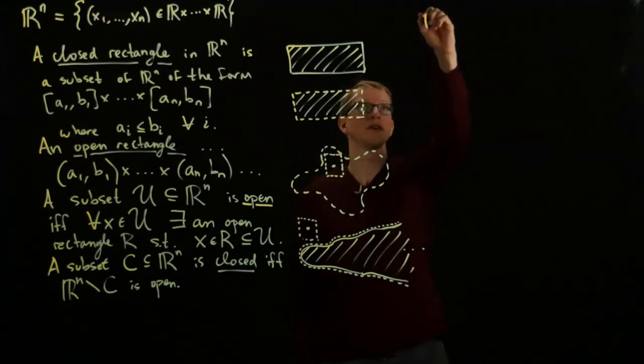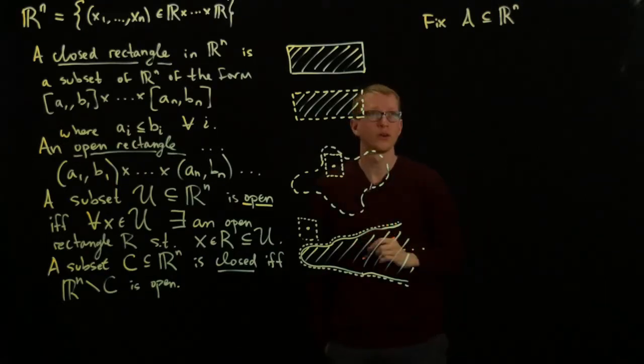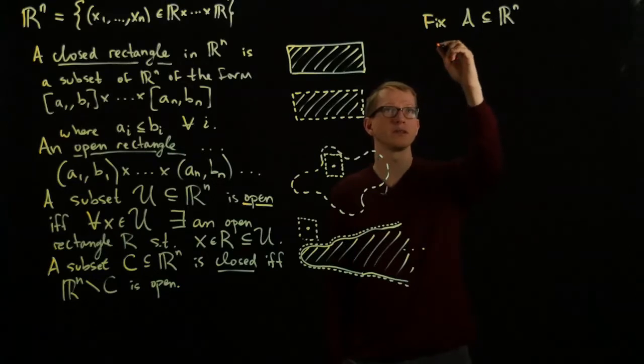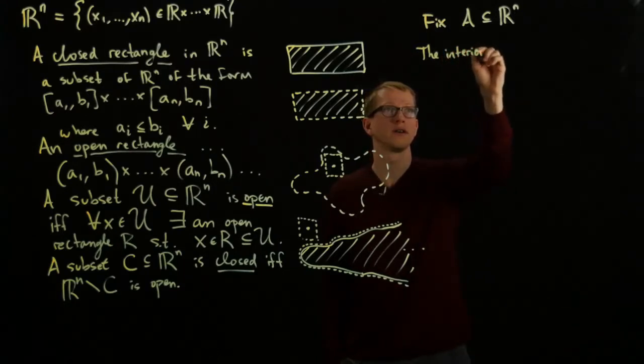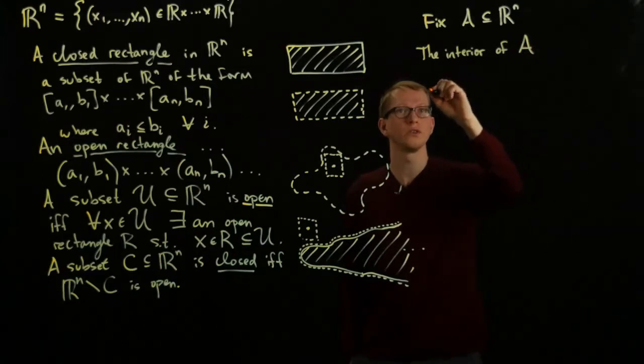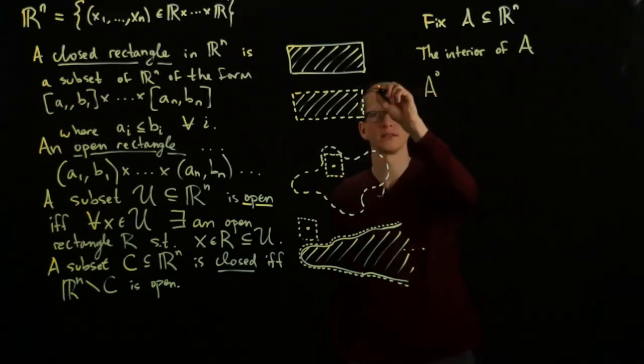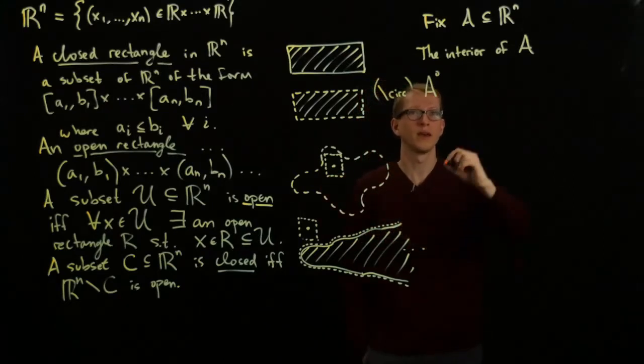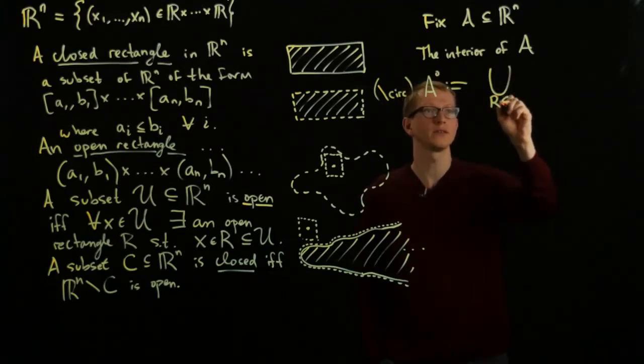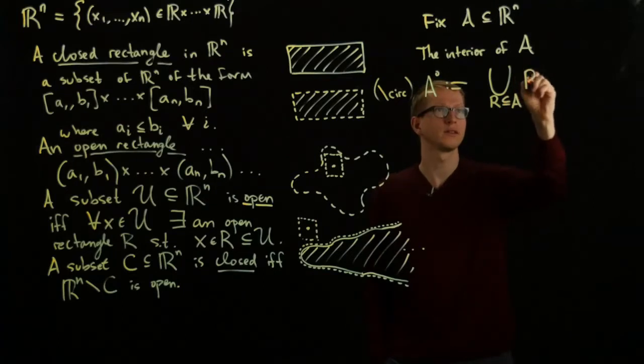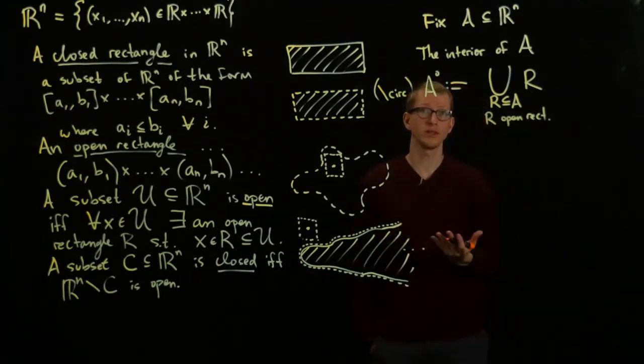Let's start with fix a particular subset and we can look at several different things for this subset. First, we can define the interior of A. And let's denote the interior with a little superscript circle, which in LaTeX, by the way, is written as slash circ. This is defined as the union of all open rectangles inside of A and R is an open rectangle. And that's what the interior of a set is.